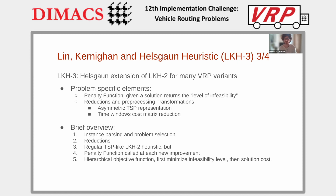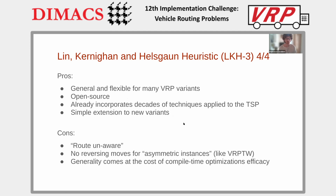The main advantages of the Lin-Kernighan-Helsgott heuristic are that it is general and can tackle many different VRP variants. It is open source and free for research purposes, and already integrates many different techniques that have been proven effective in the TSP context. It is also quite easy to extend to new VRP variants, since the penalty function provides a simple and localized way to represent constraints.